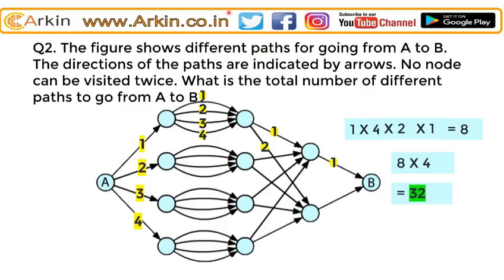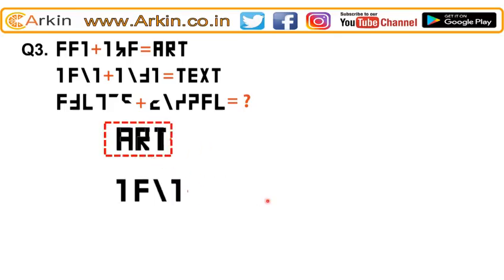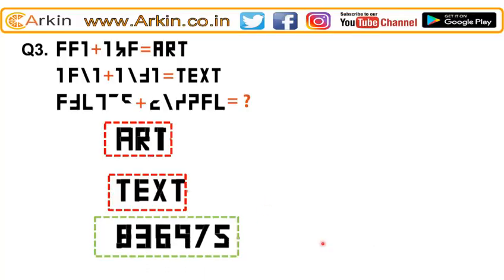We have to find out what is the relation between these two pictures so that we get this result. There is some relation between the two pictures given so that we get this result, and then we apply the same logic to find out what will be in place of the question mark. It looks like a reverse — we flip this and overlap it to get the image. Flipping the second part and overlapping it gives us the answer: 8 3 6 9 7 5, which will be in place of the question mark.